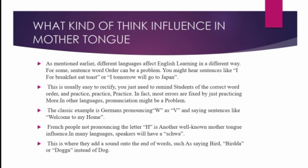What kinds of things does mother tongue influence? As mentioned earlier, different languages affect English learning in different ways. For some, sentence word order can be a problem. You might hear sentences like 'I for breakfast eat toast' or 'I tomorrow will go to Japan.' This is usually easy to rectify — you just need to remind students of the correct word order and practice, practice, practice. In fact, most errors are fixed by just practicing more.